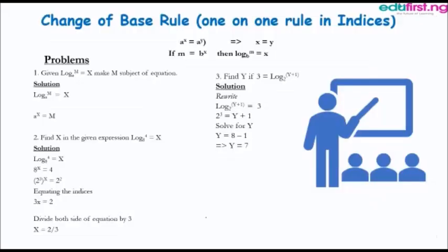To further explain, let's focus on the first rule of logarithm called the change of base rule, which parallels the one-on-one rule in indices. That rule says whenever you have an equation of the same base, their powers are equal. Similarly, when you have M equals B raised to power X, that is the same as saying log M to base B is equal to X.